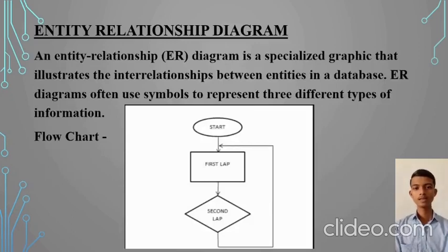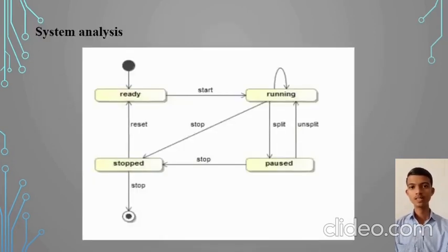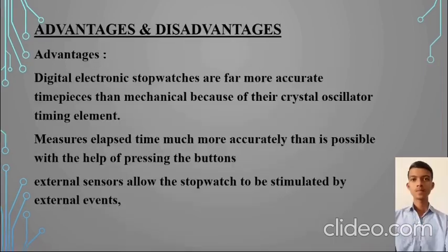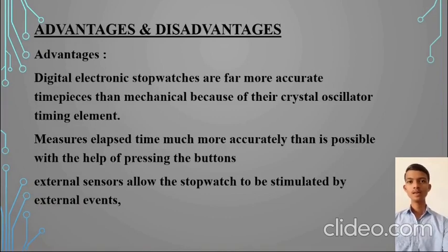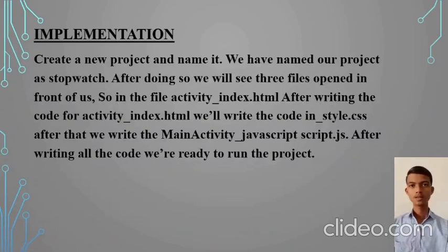Entity Relationship Diagram: An ER diagram is a specialized graphic that illustrates the interrelationships between entities. ER diagrams often use symbols to represent three different types of information. Here are the advantages of the digital stopwatch — mainly, it is a more accurate timepiece because of its timing element. These are some limitations of the stopwatch.